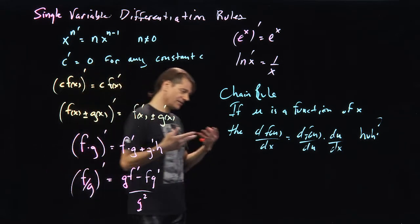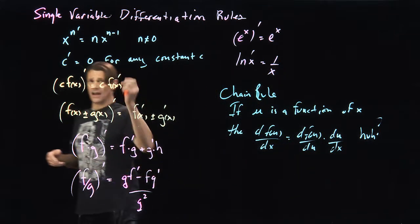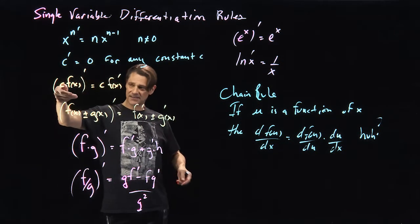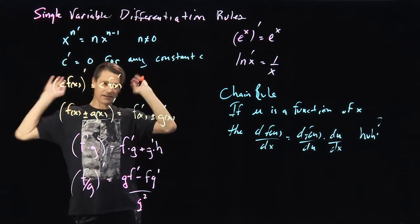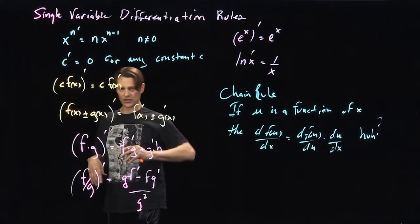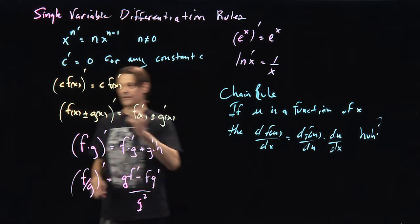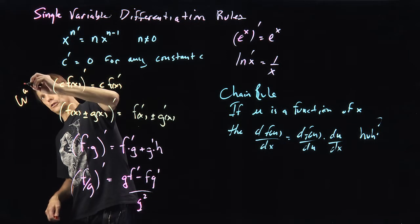And the derivative is a linear function, so it behaves really nice. The derivative of some constant c times f of x is just c times the derivative. f of x plus or minus g of x derivative is the derivative of the individual parts. All of this is easy.